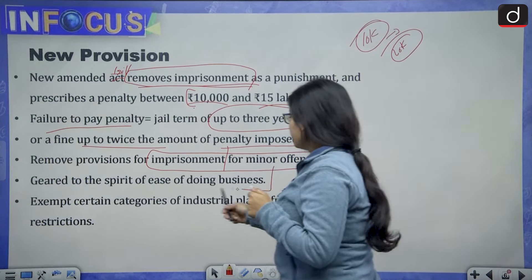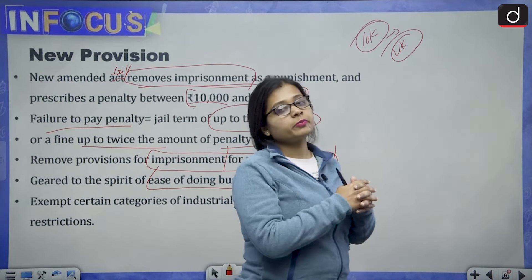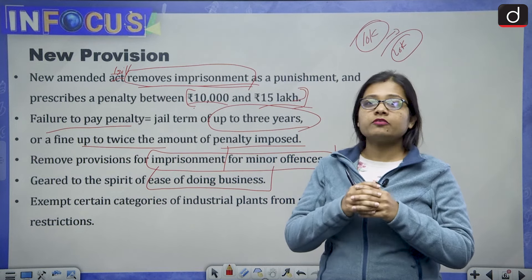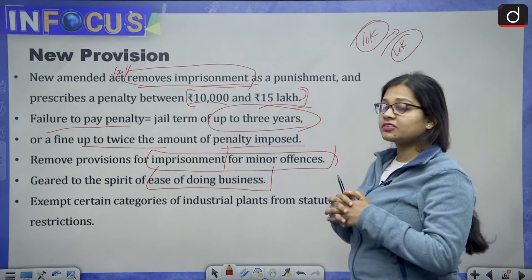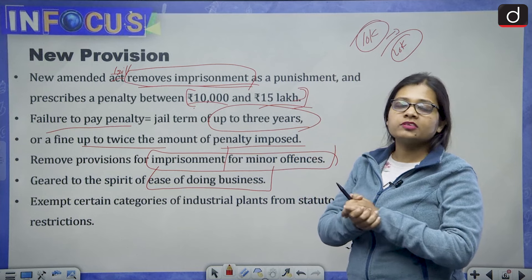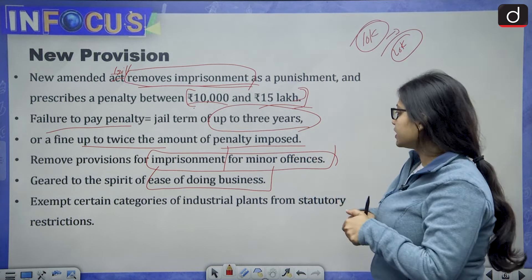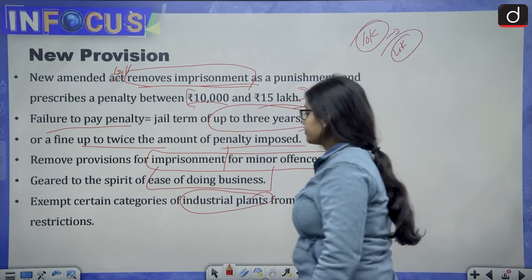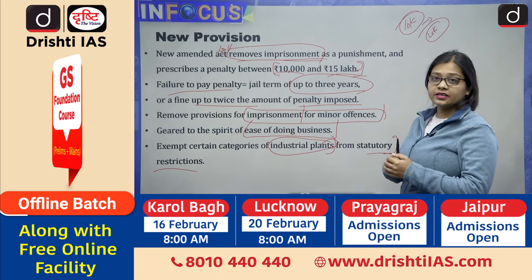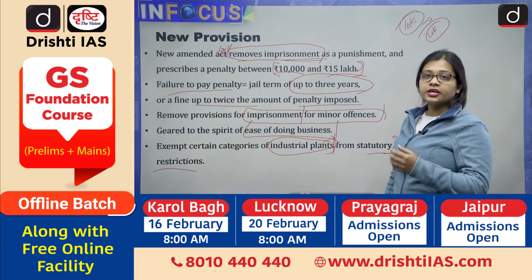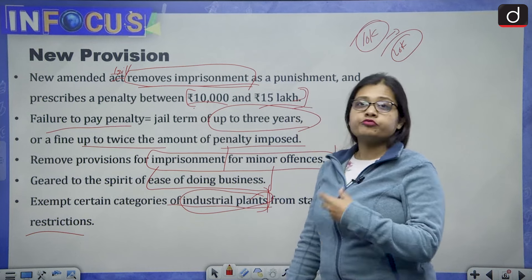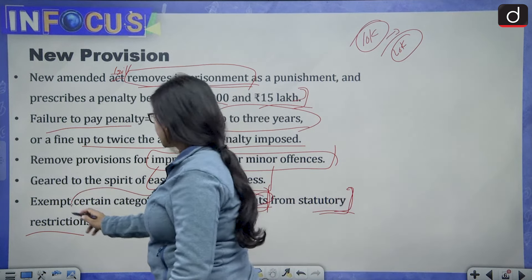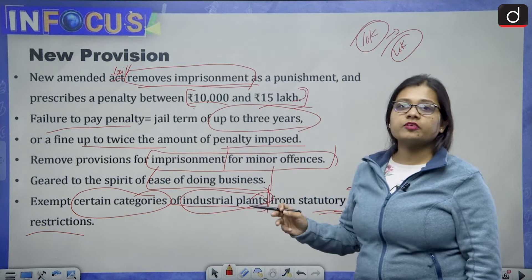This change is geared towards the spirit of ease of doing business, as the dual control of central and state governments has been lessened while the control of the central government has increased. The bill also exempts certain categories of industrial plants from statutory restrictions, meaning those plants will be free from certain obligations. However, the specific categories have not been defined in the bill.